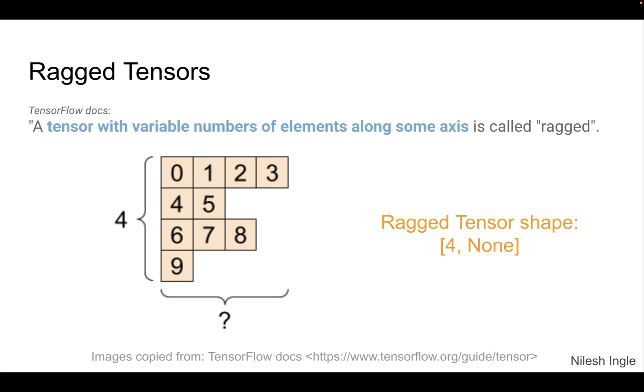Ragged tensors are defined in TensorFlow docs as shown here. This is an example where you can see that the number of elements in each row are not the same. And so we do have the number of rows is four. And so we get the four here for the shape. However, the number of columns, it is not able to define, therefore we get a none because some of these values are missing as you can see.